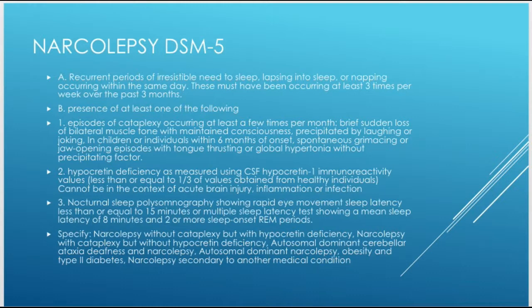Number two is hypocretin deficiency. Hypocretin, also known as orexin, is measured by CSF hypocretin-1 immunoreactivity values less than or equal to one-third of the values obtained from healthy individuals. This cannot be in the context of acute brain injury, inflammation, or infection.